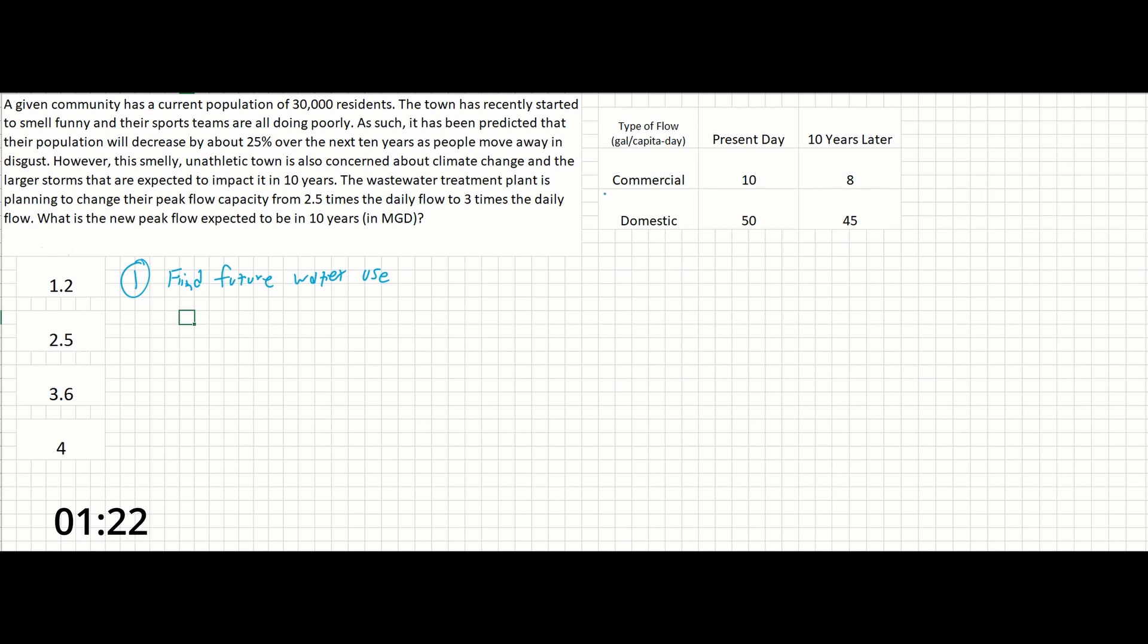So from our table over here we can see that 10 years later the expected commercial use in gallons per capita per day is 8 and the domestic is 45. So 8 plus 45 simply equals 53 gallons per capita per day.